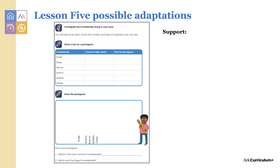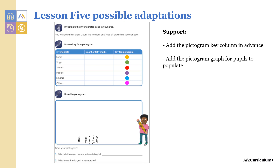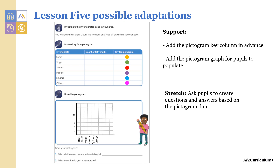In lesson five, pupils need to use their data from an investigation to complete a pictogram. Support pupils by adding the pictogram key column in advance, and by adding the pictogram graph for pupils to populate. Stretch them by asking pupils to create questions and answers based on the pictogram data.